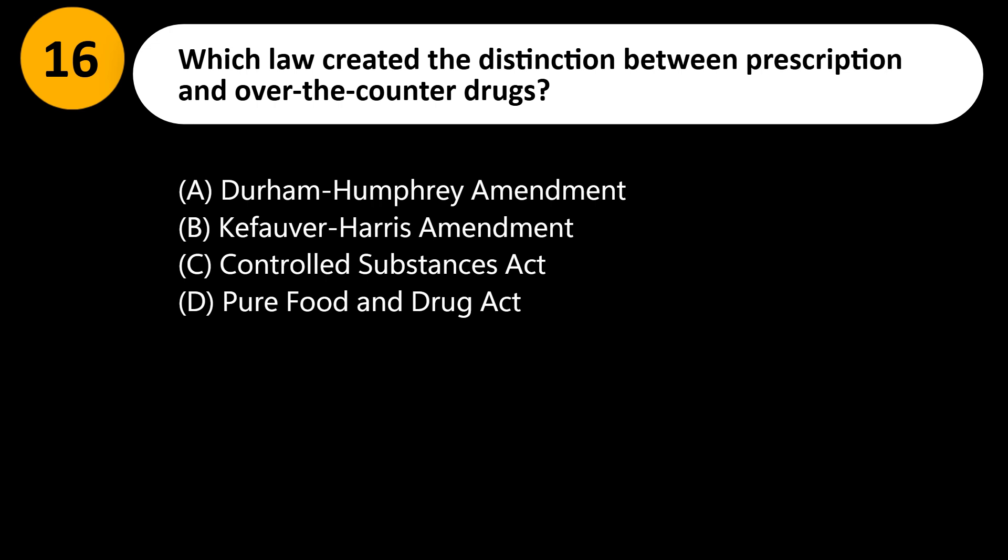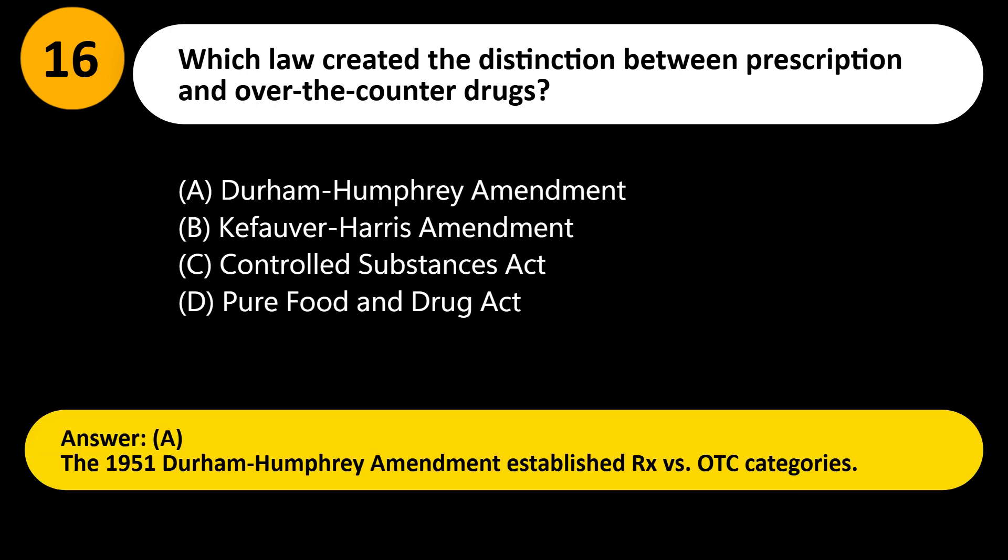Which law created the distinction between prescription and over-the-counter drugs? A) Durham-Humphrey Amendment, B) Kefauver-Harris Amendment, C) Controlled Substances Act, D) Pure Food and Drug Act. Answer: A. The 1951 Durham-Humphrey Amendment established the Rx versus OTC categories.